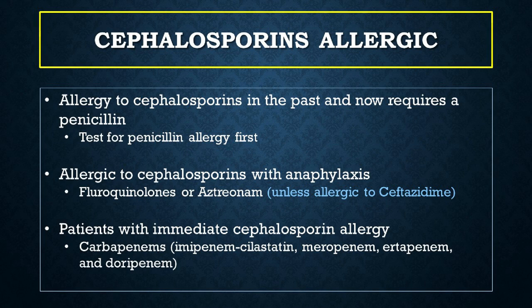What do we do if a patient is allergic to cephalosporins? If a cephalosporin allergy has been reported in the past and the patient now requires penicillin, test for penicillin allergy first, then give penicillin. If the patient is allergic to cephalosporins with anaphylaxis, do not give penicillin or cephalosporins — but you can give fluoroquinolones or aztreonam. However, if the patient is specifically allergic to ceftazidime, do not give aztreonam, because aztreonam and ceftazidime share an identical side chain and cross-reactivity between the two drugs is reported. In patients with immediate cephalosporin allergy, you can use one of the carbapenems: imipenem-cilastatin, meropenem, ertapenem, or doripenem.